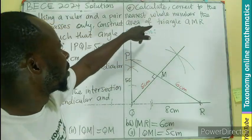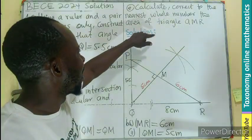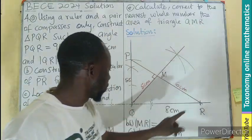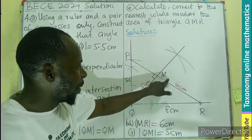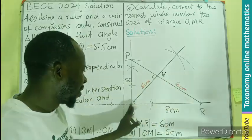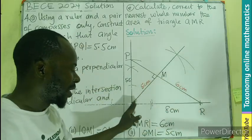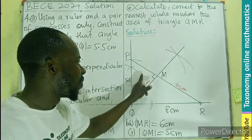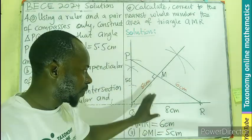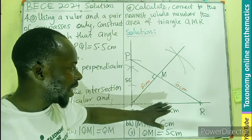Let's see the next question. We have to calculate, correct to the nearest whole number, the area of the triangle QMR. This very triangle we just have, that have the dimensions to be 5, 6, and 8. This triangle. We are looking for the area.